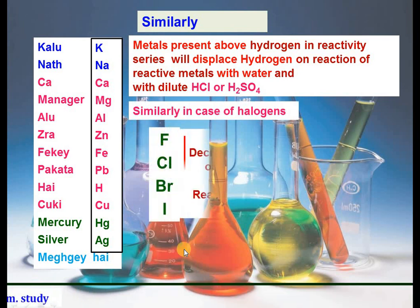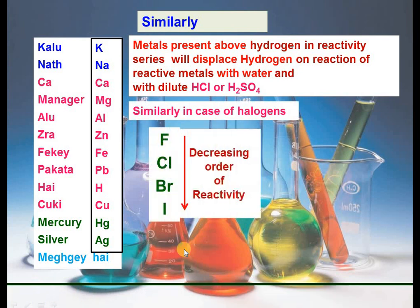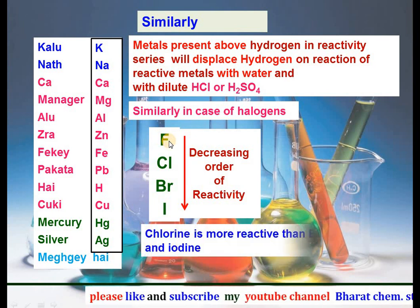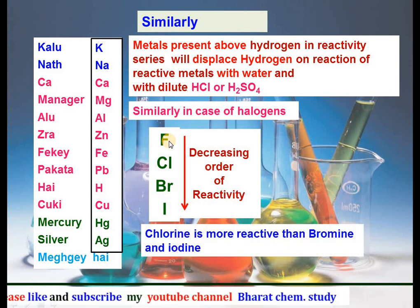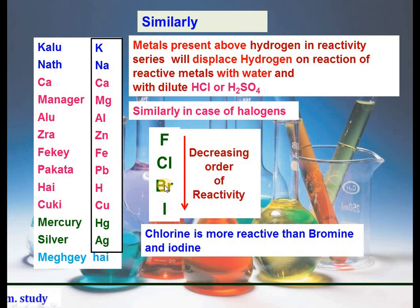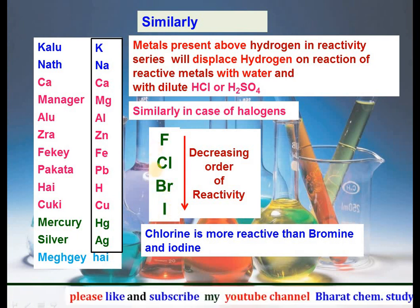Similarly, in the case of halogens, the decreasing order of reactivity is: chlorine is more reactive than bromine, and bromine is more reactive than iodine.